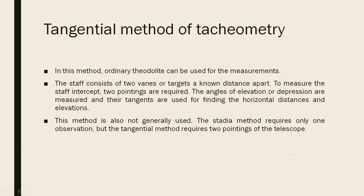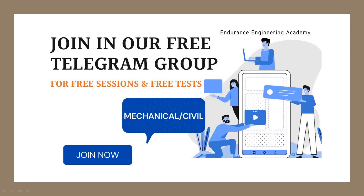The next method is the tangential method of tachymetry. In this method, no stadia hairs are used. The staff intercepts two points, and the angles of elevation or depression are measured. The tangents are used for finding the horizontal distance and elevations. The angle of elevation and the tangent values are measured to compute horizontal distances and heights.